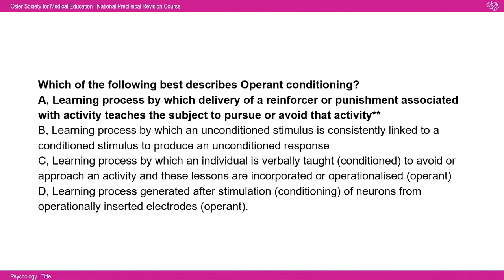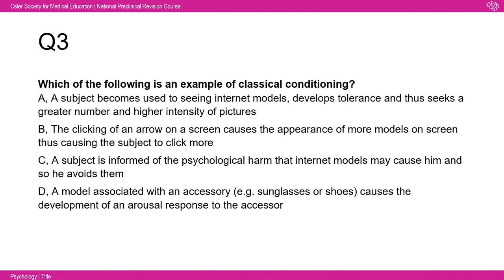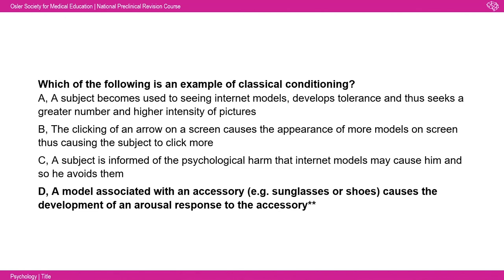The options are: A: a subject becomes used to seeing internet models and develops tolerance, seeking greater intensity; B: clicking an arrow causes more images, causing the subject to click more; C: a subject is informed of psychological harm and so avoids them; D: a model associated with an accessory — for example sunglasses or shoes — causes the development of an arousal response to that accessory. The answer is D, as it demonstrates a previously neutral stimulus becoming associated with a conditioned response — based on a study conducted with university students.